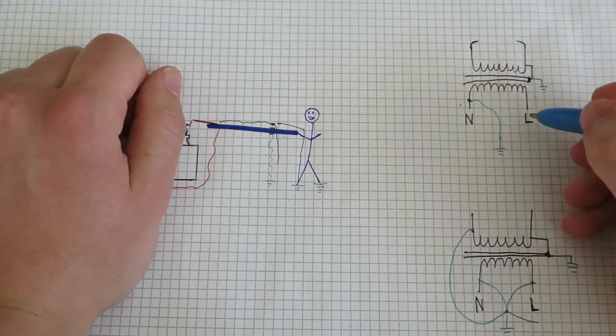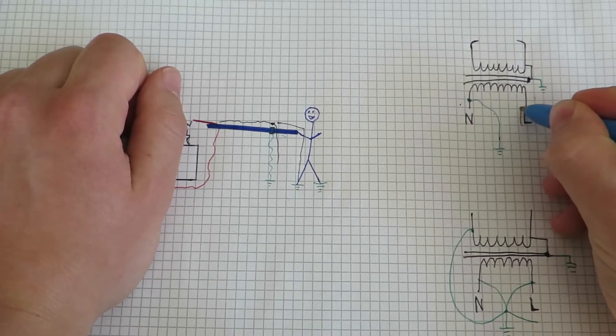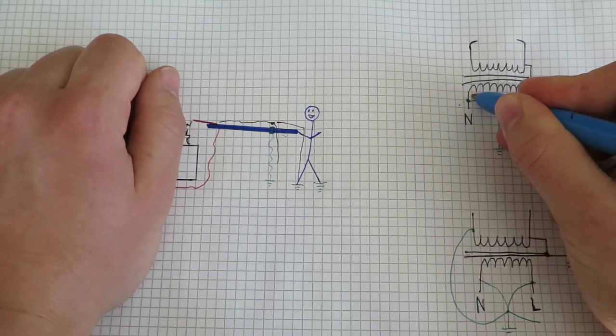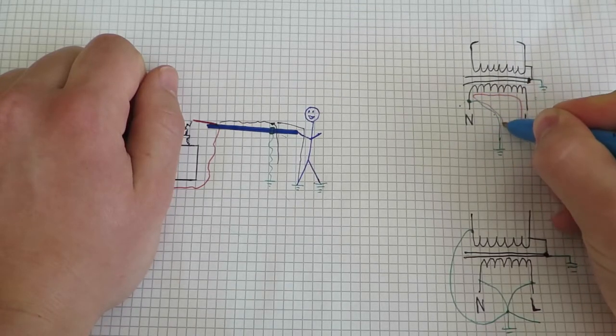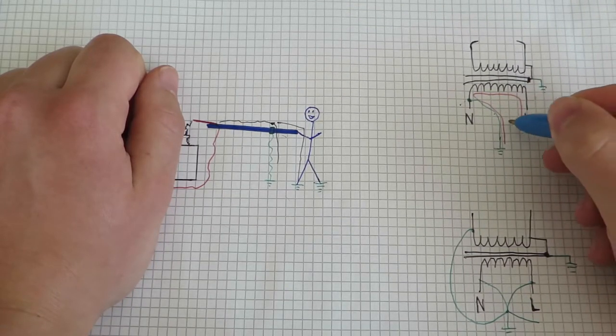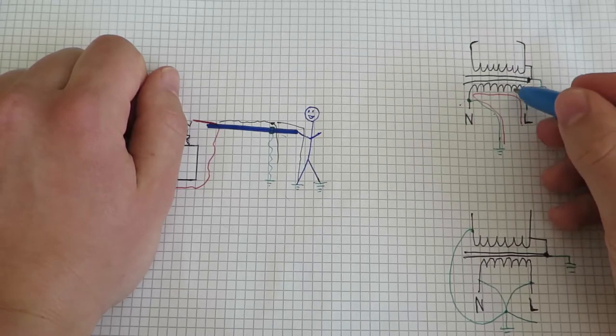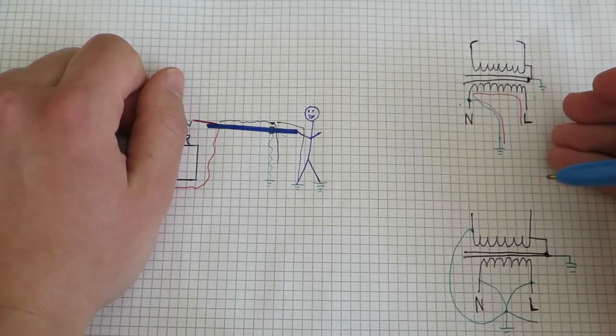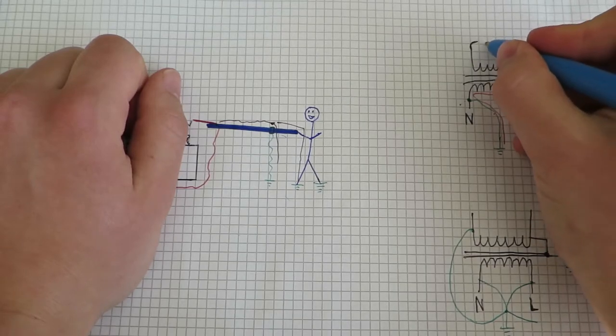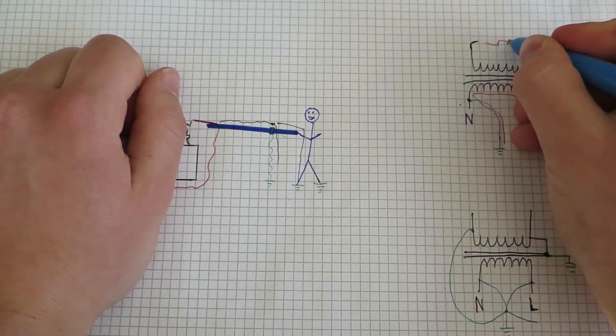What would happen in that case is that the power would flow from the neutral and then through the grounding electrode and back into mains. And as you can see, we have current flow through the primary, which would mean that we have a high voltage on the secondary.